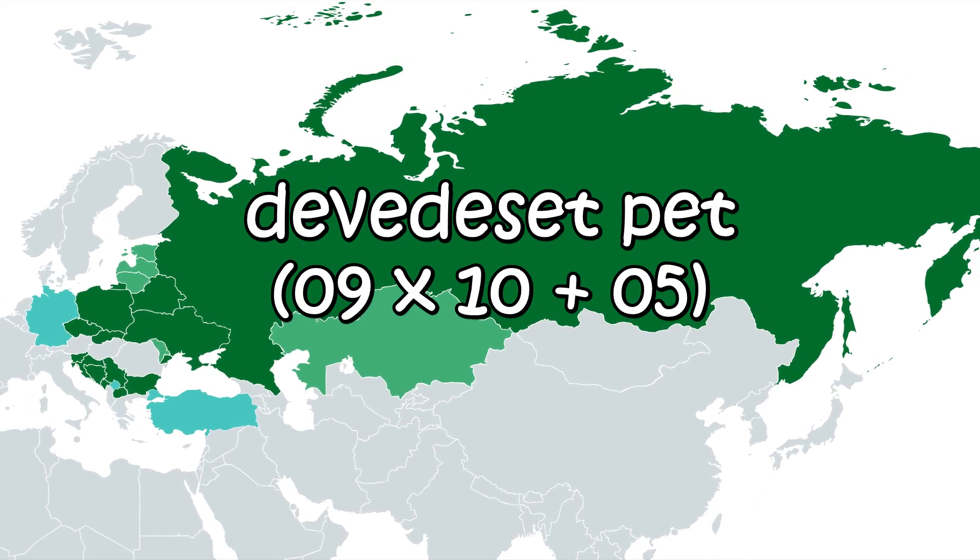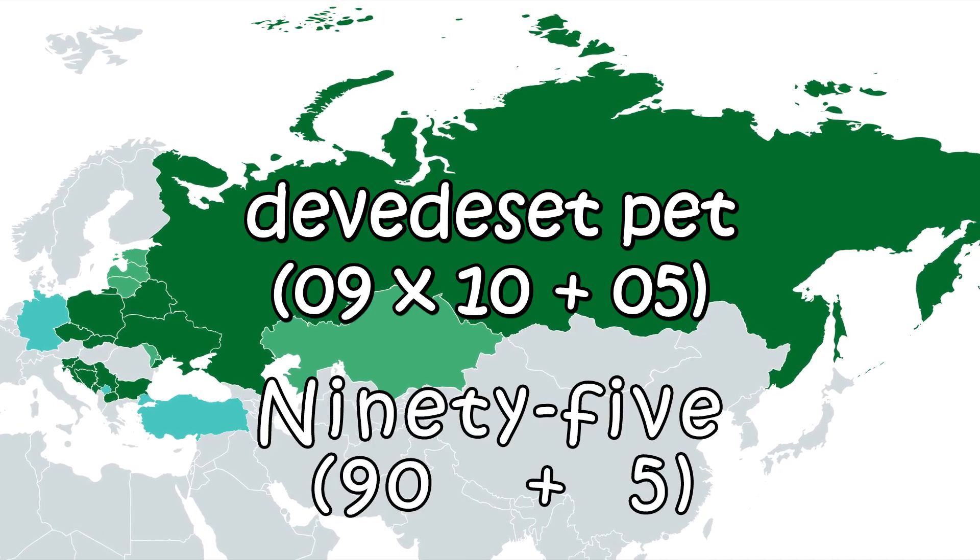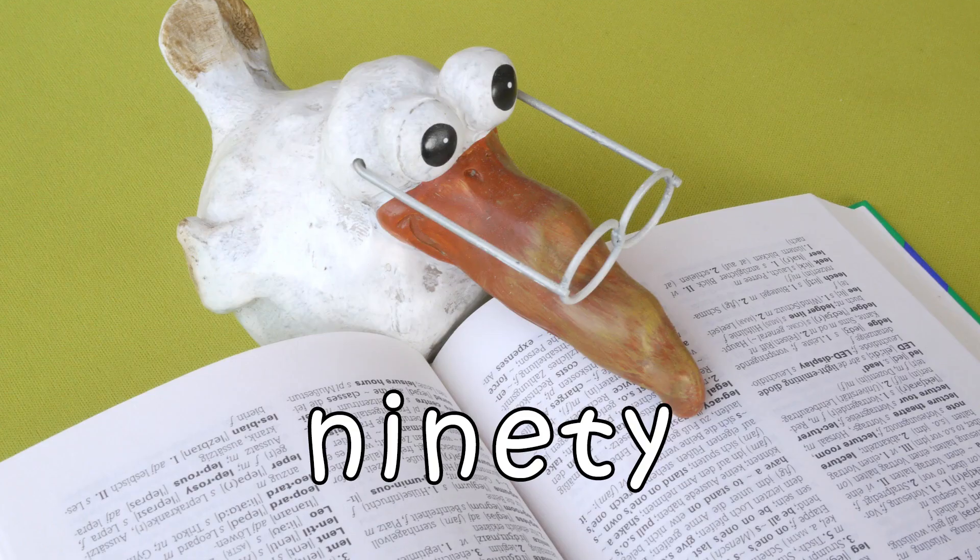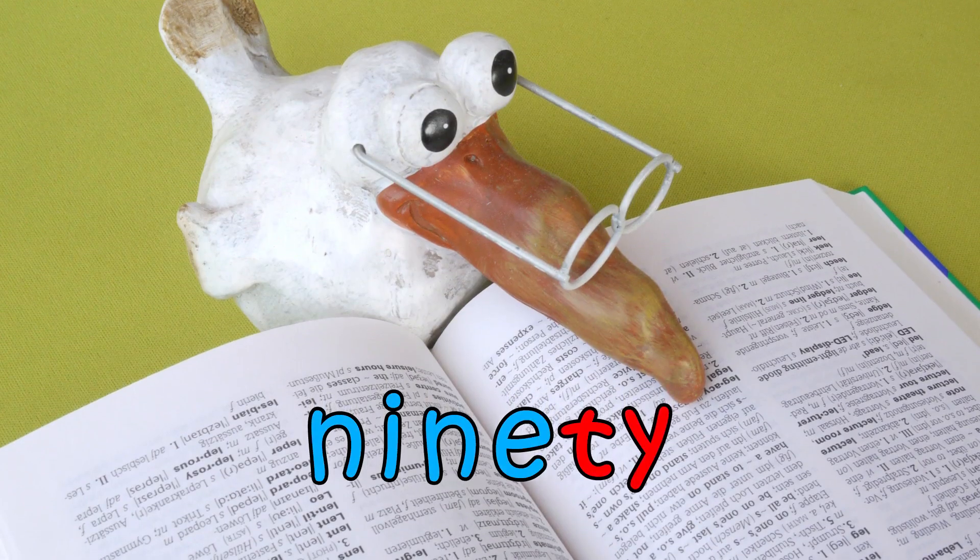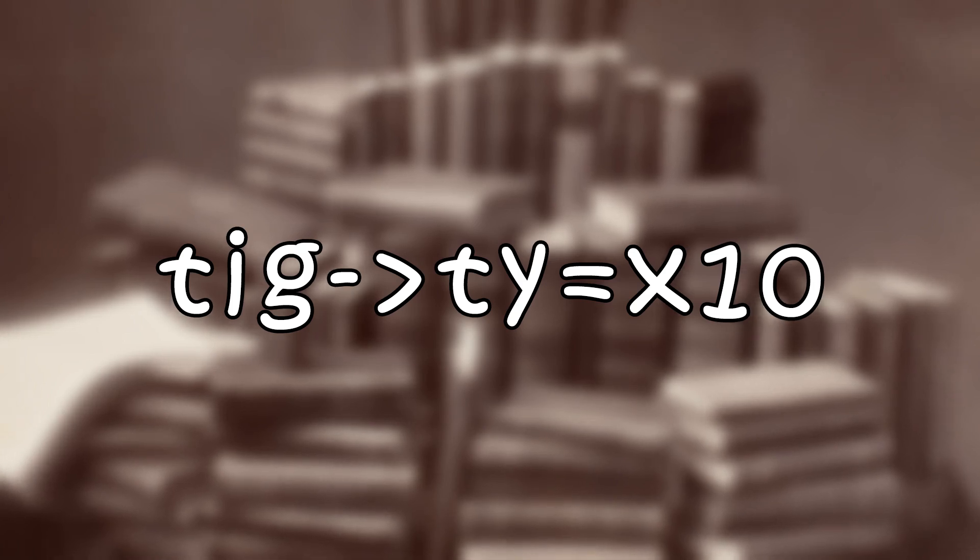In Slavic languages, it's nine-tenths plus 5, which is very similar to English. Ninety, by the way, comes from nine-t, where t is Old English for tens.